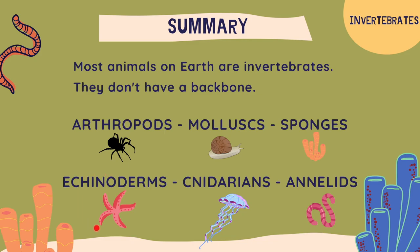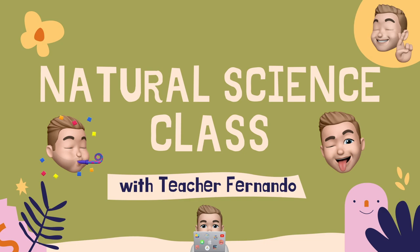Eukinoderms — in this group we can find starfish. Another group is nidarians, which are mostly jellyfish. And the last group is the group of worms, called annelids. That was all for this video!